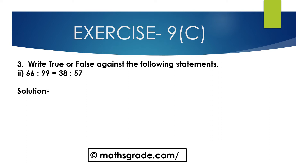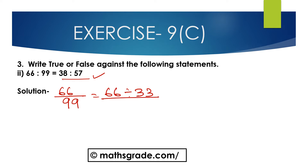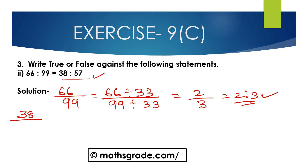Now question number 2: 66 is to 99 is equal to 38 is to 57. We have to check whether these two ratios are equal — true or false. 66 is to 99 — that is 66 divided by 99. Between 66 and 99, 33 is the common factor. So divide the antecedent 66 by 33 and the consequent 99 by 33. 66 divided by 33 is 2, and 99 divided by 33 is 3. That is 2 is to 3.